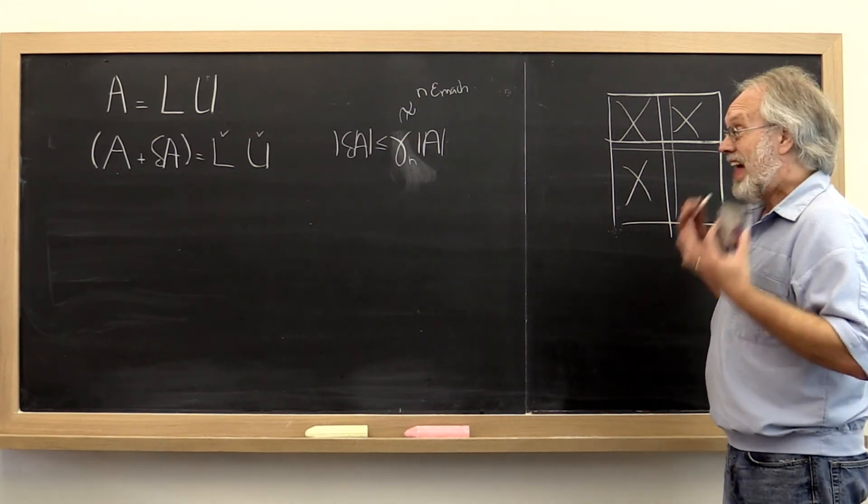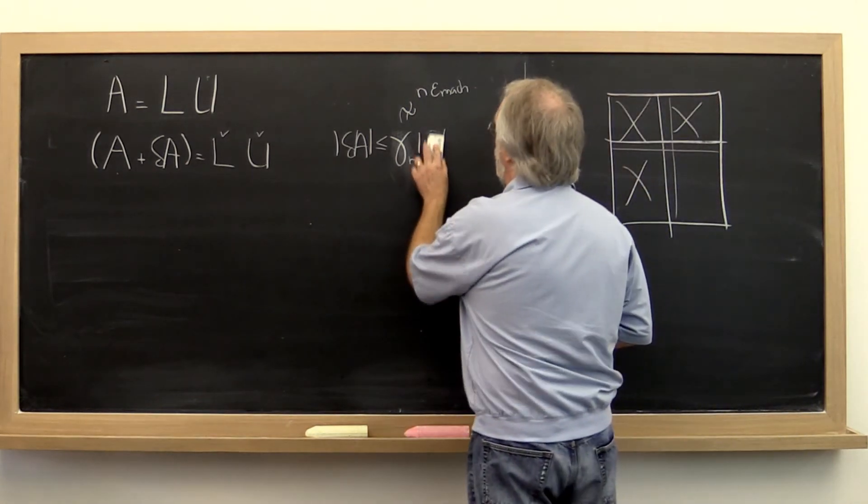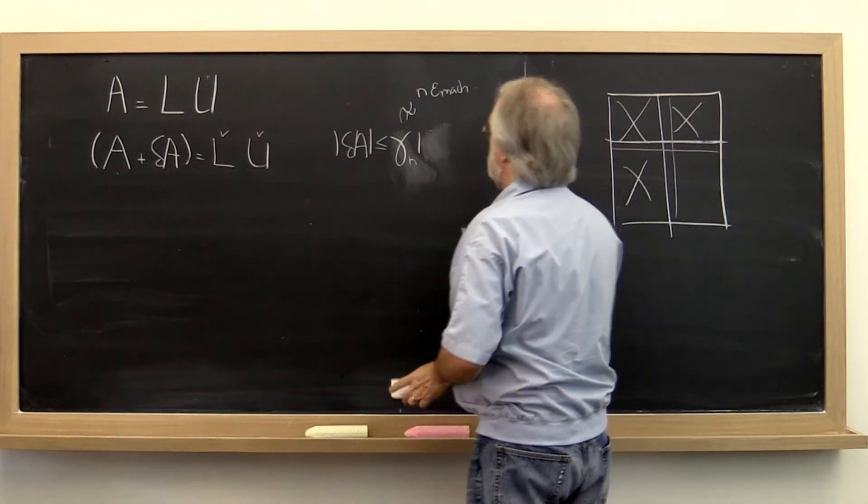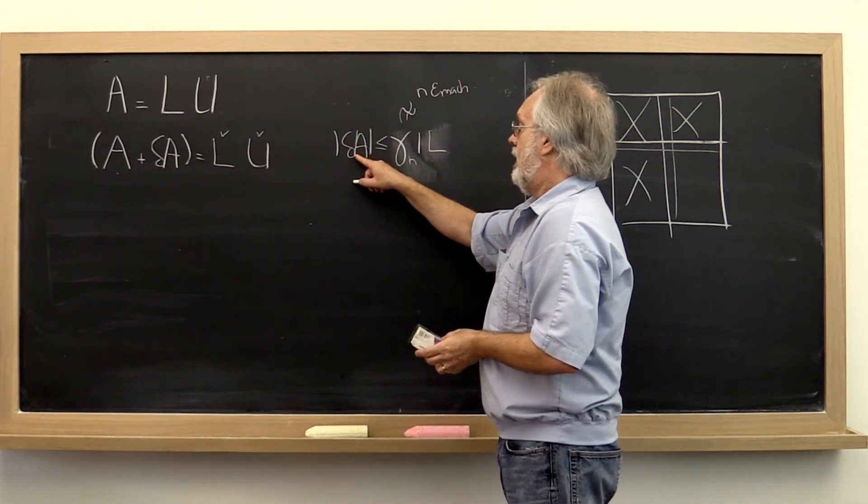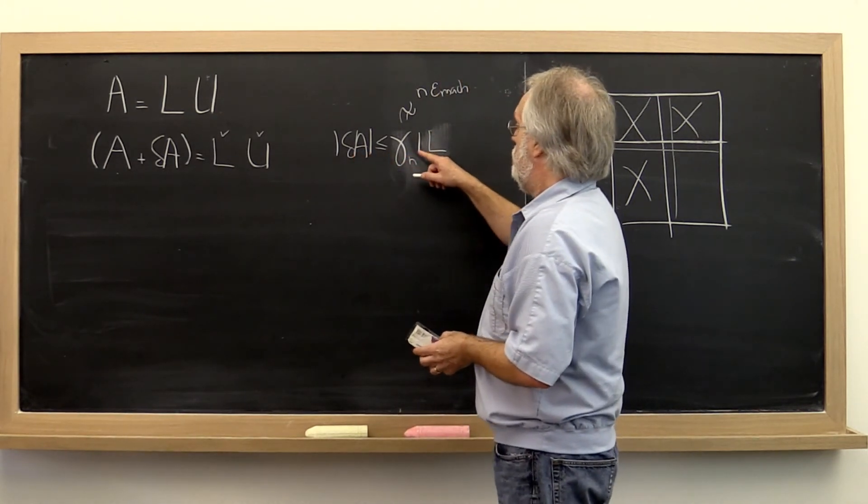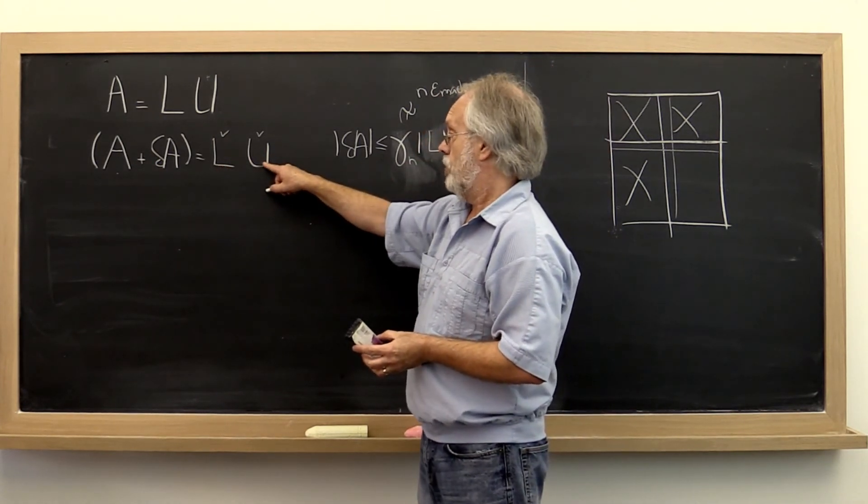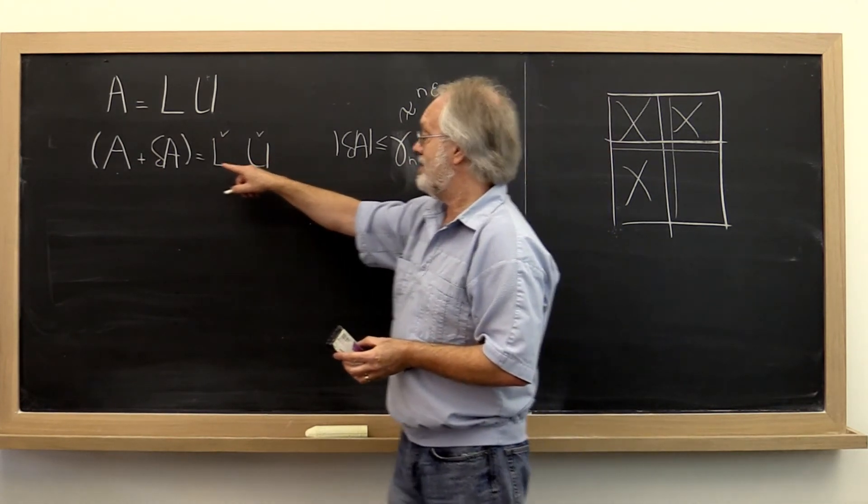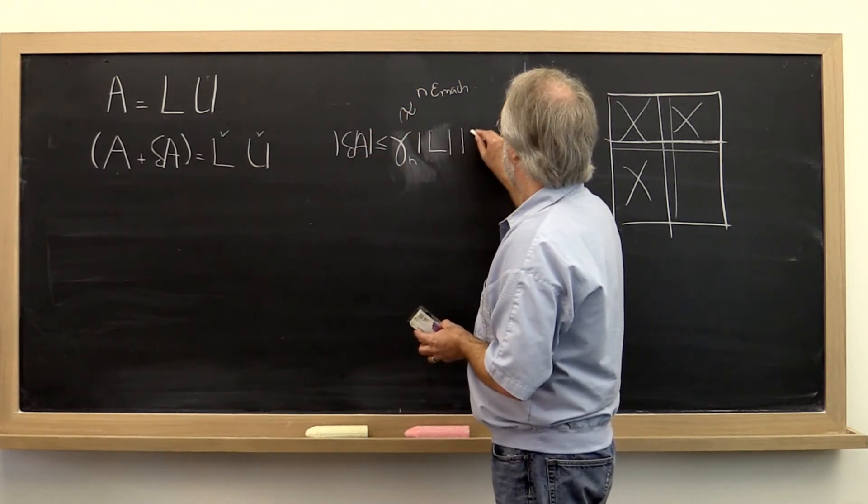For that particular algorithmic variant, you can show that the computed L and U are equal to the exact LU factorization of a changed matrix with this property right here.